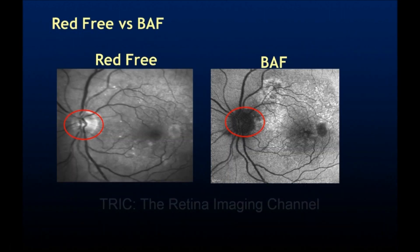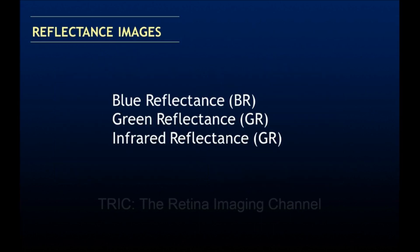Comparing red free images with blue autofluorescence side by side, the optic nerve is grayish in the red free image but dark black in the autofluorescence image. The next set of black and white fundus images are reflectance images, obtained using a confocal scanning laser-based fundus camera such as Spectralis, which uses laser channels instead of white light to acquire images.